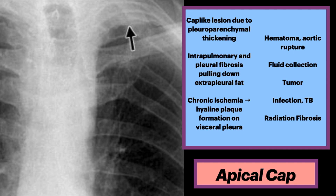The prevalence increases with age. It can also be seen with hematoma resulting from aortic rupture or another fluid collection associated with infection or tumor, either outside the parietal pleura or located within the pleural space. Radiation fibrosis is another consideration.